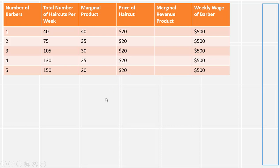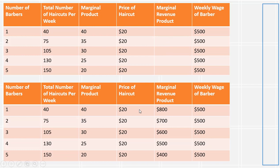The next thing we want to do is get marginal revenue product, which is marginal product times price. We can just take those two columns and multiply them together: 40 times 20 is 800, 35 times 20 is 700, 30 times 20 is 600, and so on. That's the marginal revenue product — the increase in total revenue from hiring an additional worker.